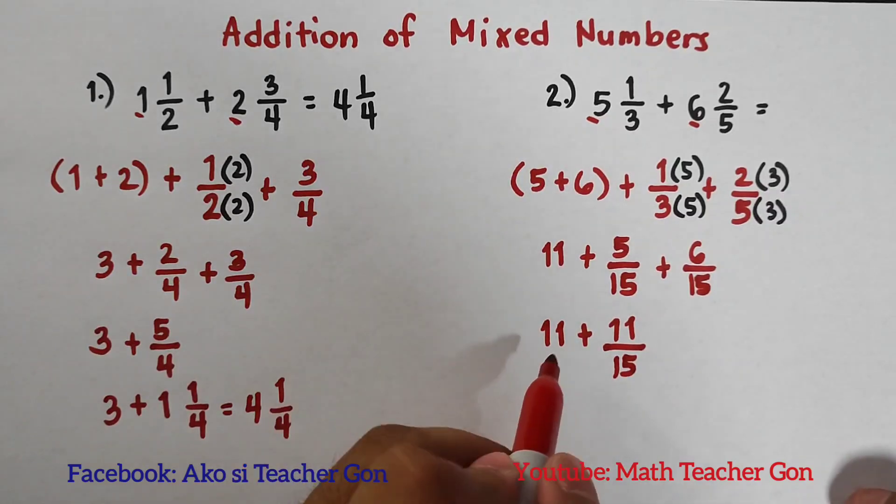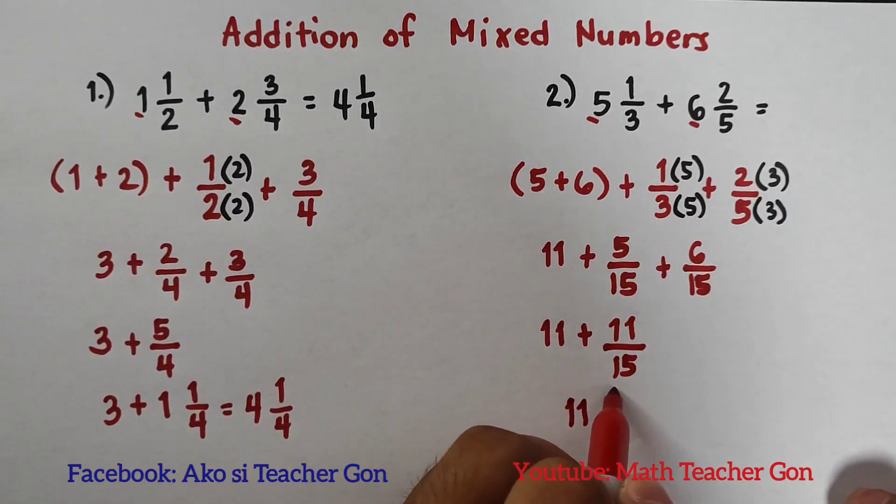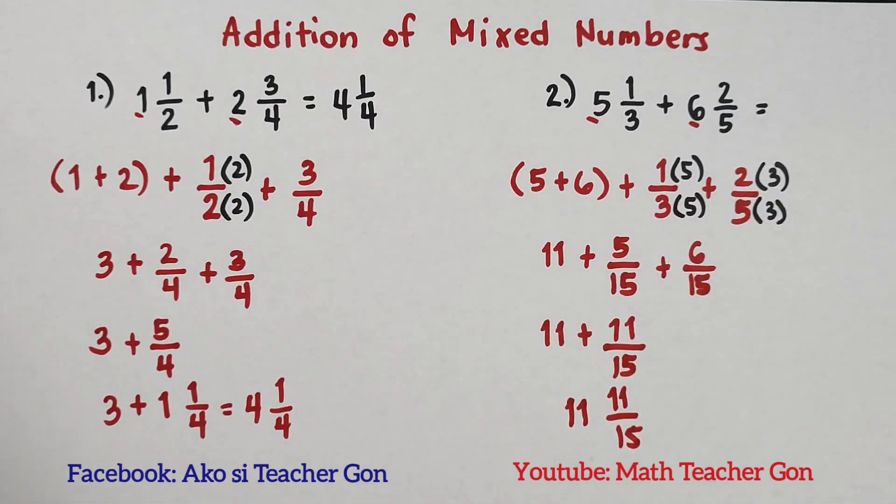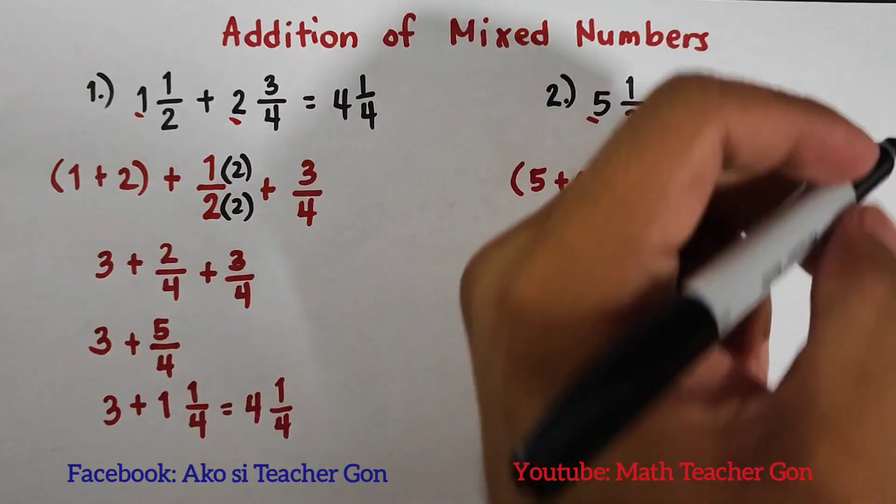And to simplify, our final answer: 11 + 11/15, that is definitely 11 and 11/15. So this is now the final answer for item number two: 11 and 11/15.